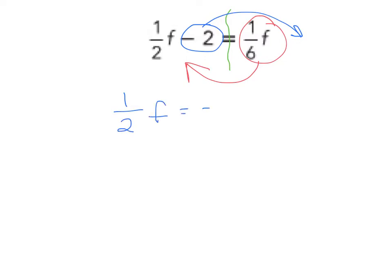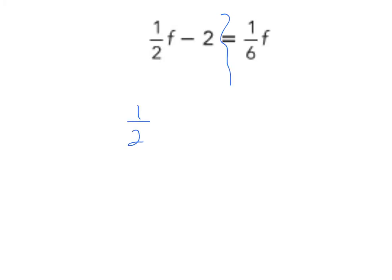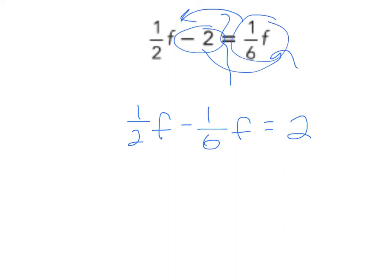So we're going to have 1 half f equals, I'm sorry, whoops. Let's try that one again. Let's delete that. Oh well. Draw the wall. So we'll have 1 half f minus 1 sixth f equals positive 2. Because remember when there's two crosses, it turns positive. And this positive 1 sixth comes over, it turns negative.